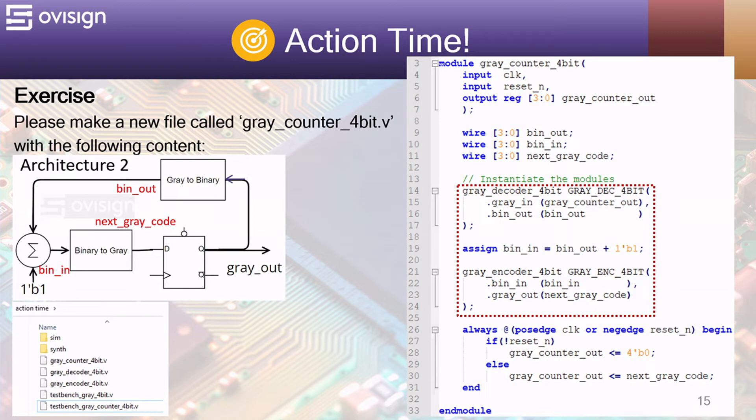And now it's action time! Now we're going to implement a 4-bit gray counter using architecture number 2. You also get to implement a test bench for it and simulate it using ModelSim.